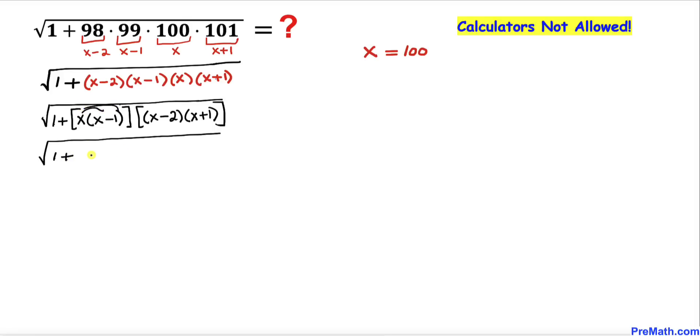I'm going to distribute this thing, that's going to give us x squared minus x. And likewise over here I'm going to do the double distribution to simplify that one. That is going to give us x squared plus x minus 2x minus 2.